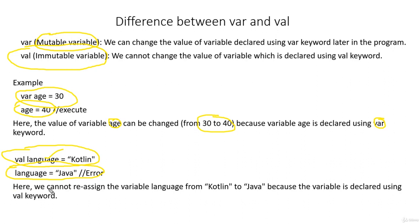Then we have an error. Why? Because here we cannot reassign — we cannot reassign the variable language from Kotlin to Java because the variable is declared using the val keyword. So if we use val, we cannot reassign it. That's it. I hope you guys have a clear understanding of the difference between var and val in Kotlin. Let's meet in the next lecture where we will be learning more about Kotlin.